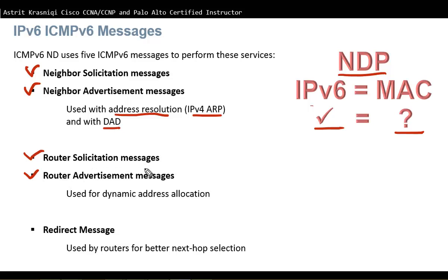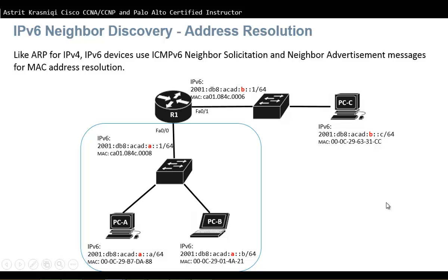We also have Router Solicitation and Router Advertisement messages. Router Solicitation is sent by a device that doesn't yet have an IP address, asking the router to send a Router Advertisement. The Router Advertisement is sent in response to a Router Solicitation and also every 200 seconds, providing dynamic allocation of IPv6 addresses. The fifth ICMPv6 message is Redirect, which is sent by routers for better next-hop selection.